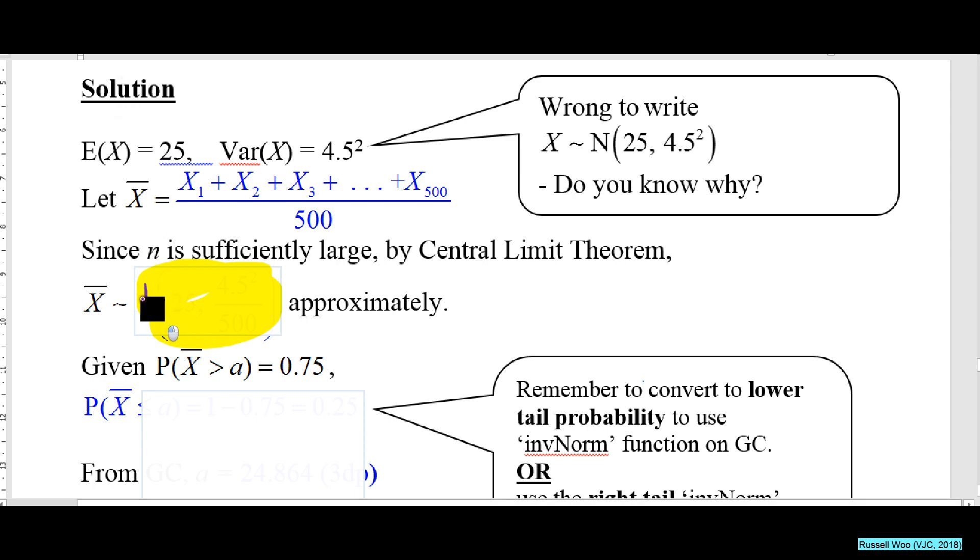It's a normal distribution with mean 25 and 4.5 squared over 500, approximately.